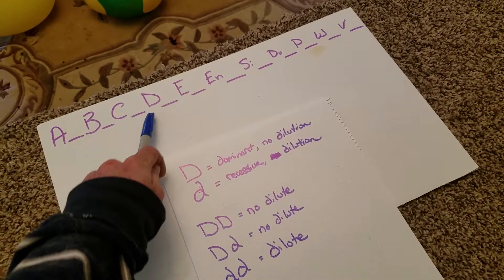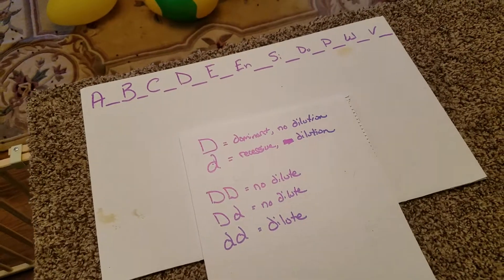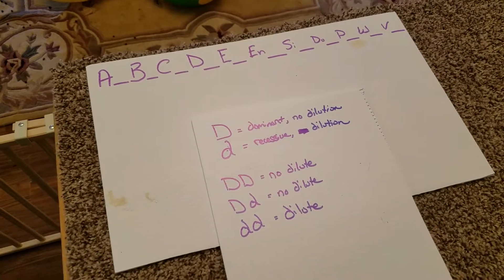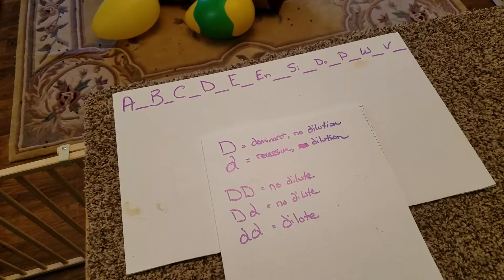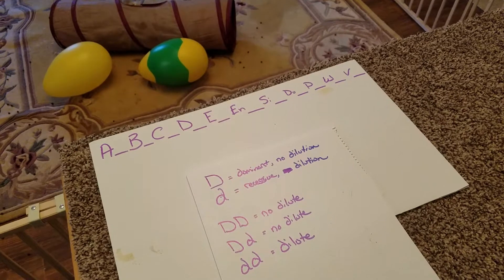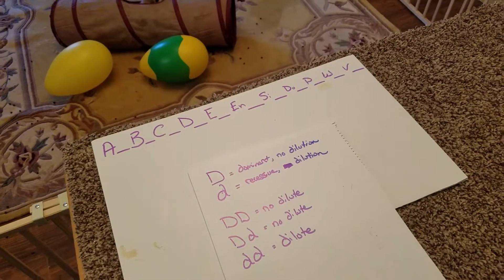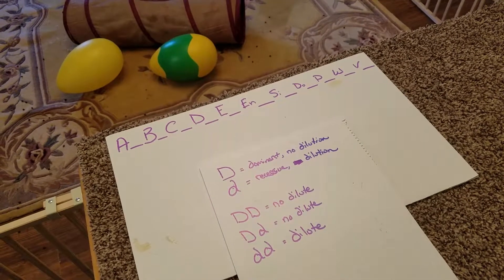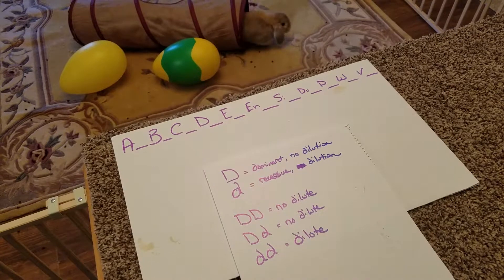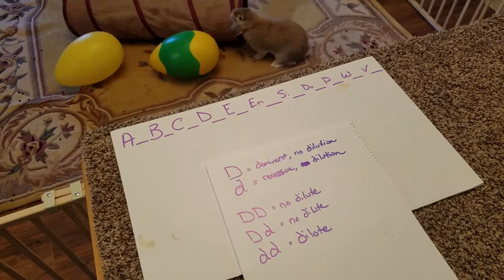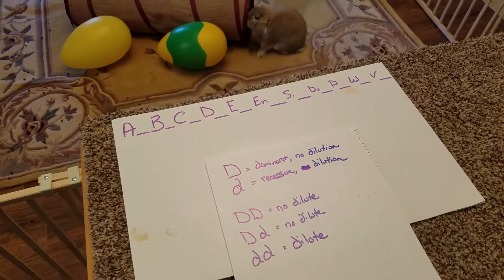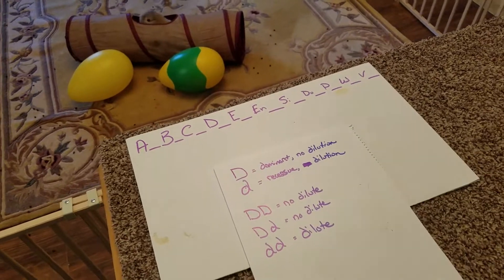Today we're going to be talking about the D locus point. This is actually a really easy one to understand. When we're talking about the D locus, we're talking about what we call dilution. Dilution is best described as taking a color and watering it down or modifying it to give us a different color. For instance, if we take a black color and we dilute that down, we're going to get blue. If we have a chocolate rabbit and we dilute that down, we get a color called lilac. Chestnut is going to be opal. Your cinnamon is going to be lilac agouti or another term for that would be lynx.